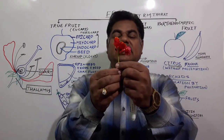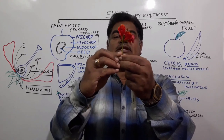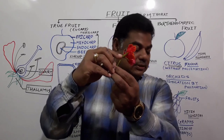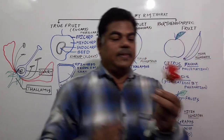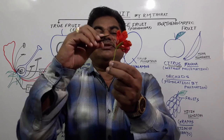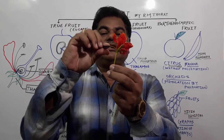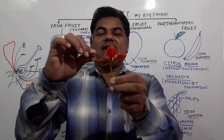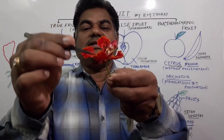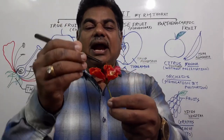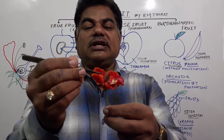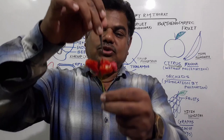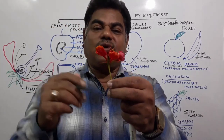A flower consists of a pedicel, then the thalamus, then a structure we call the calyx, then the corolla, then the male reproductive organ which we call collectively the androecium, and the innermost part of the flower we call the gynoecium.